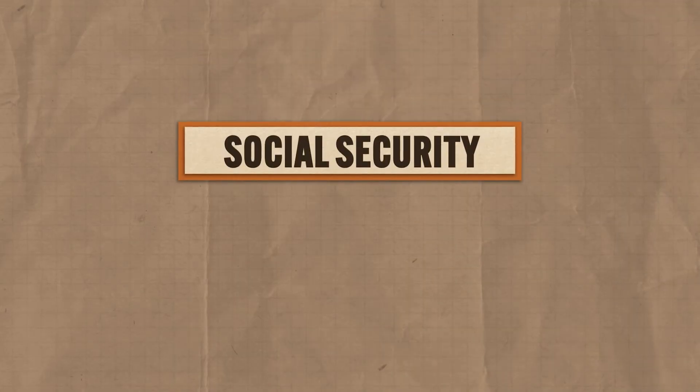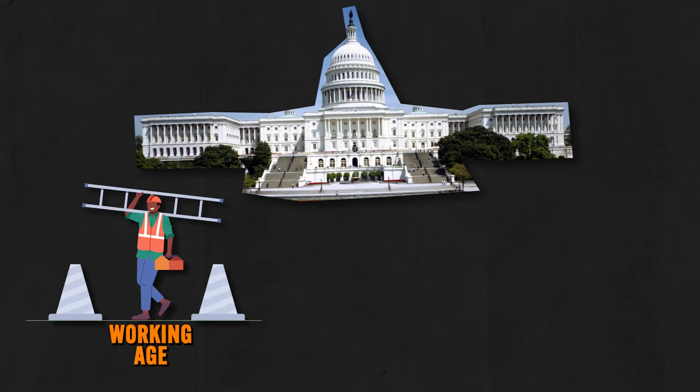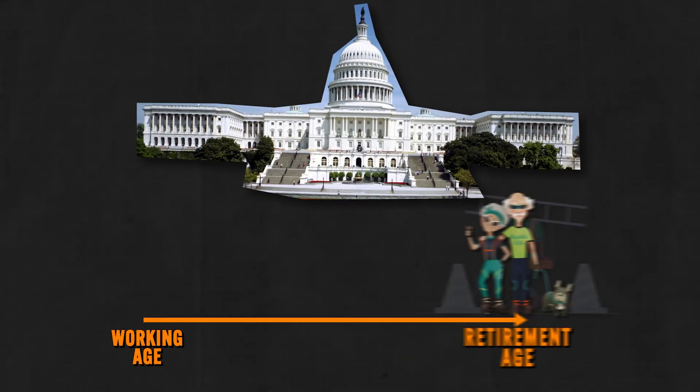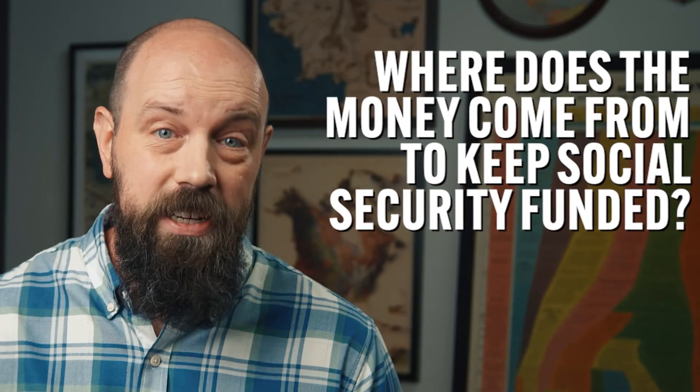Let me give you a quick explanation of how social security works. It was a policy passed by the federal government in 1935 as a financial safety net for retired people. The idea was that the government would take some money out of your paycheck, and when you hit retirement age you could stop working and get paid from the government until you die. In 1935 that was fine because people generally lived shorter lives, so the payout wasn't nearly as much. But where does the money come from to keep social security funded? It comes from taxes paid by the current working-age population. Now that better medicines, healthcare, and nutrition have increased life expectancies, there are more people retiring and living longer than there are working people to pay for their retirement — and that is a big problem for the United States that has not been solved yet.